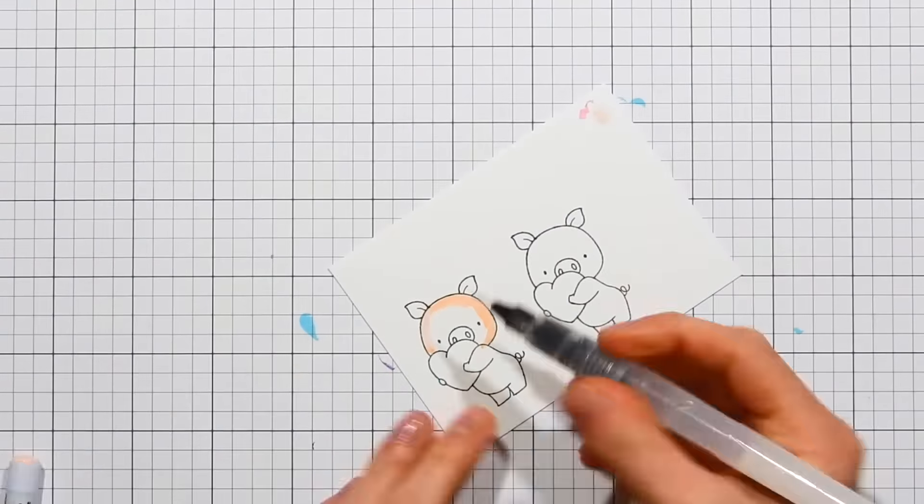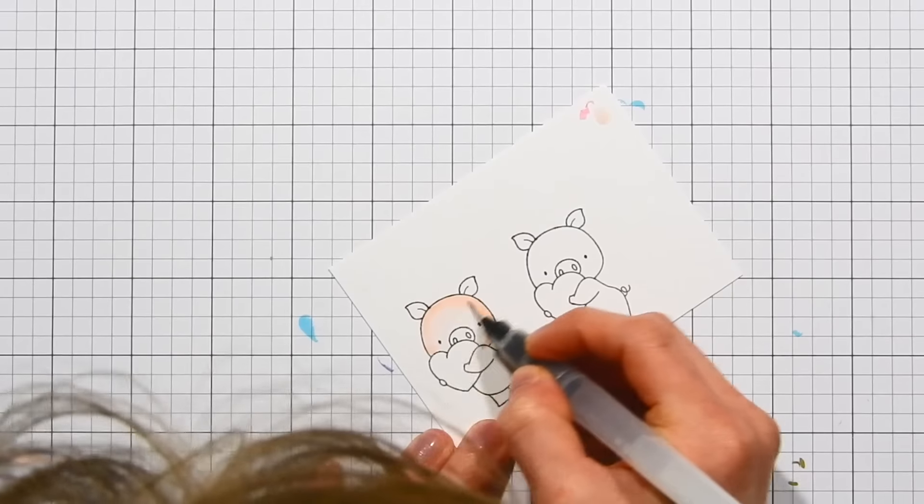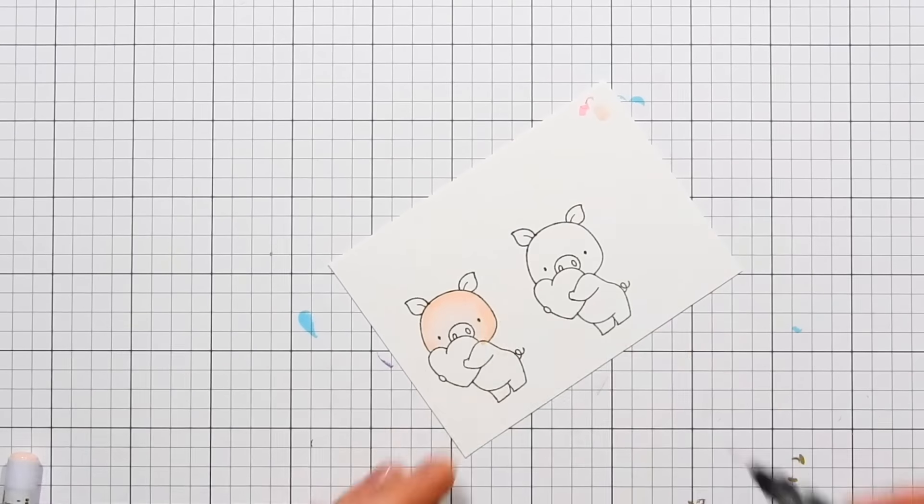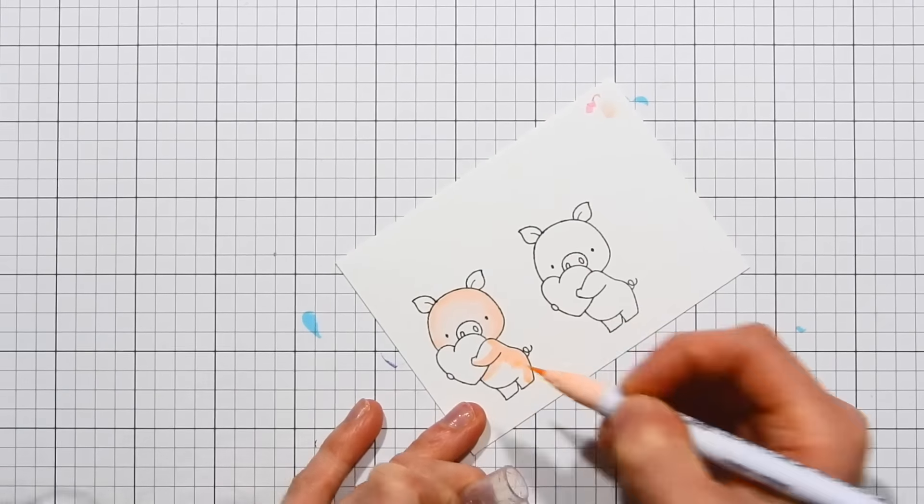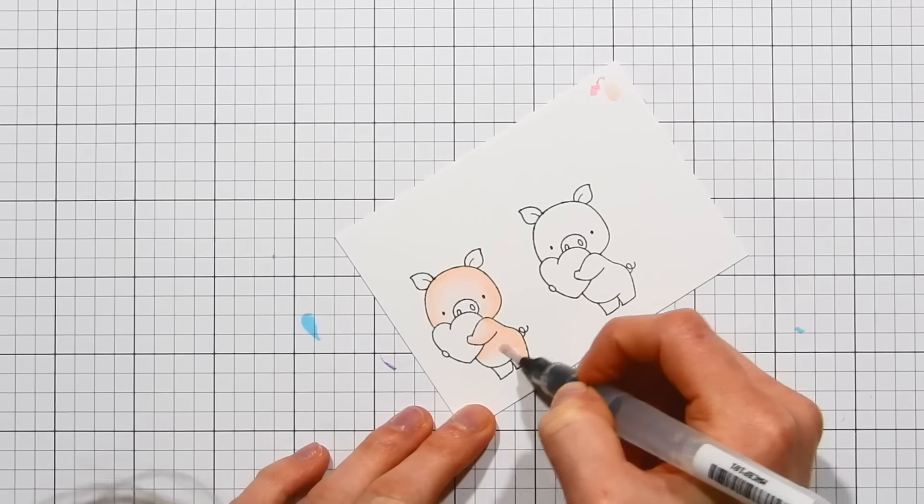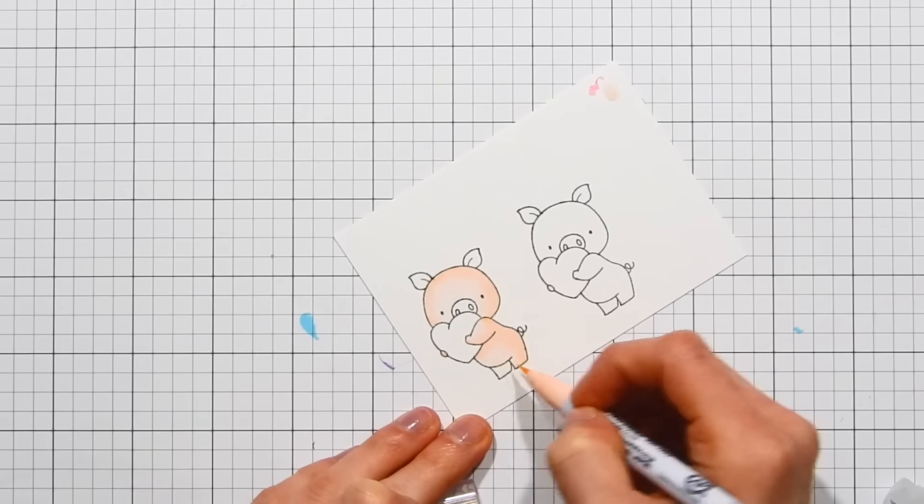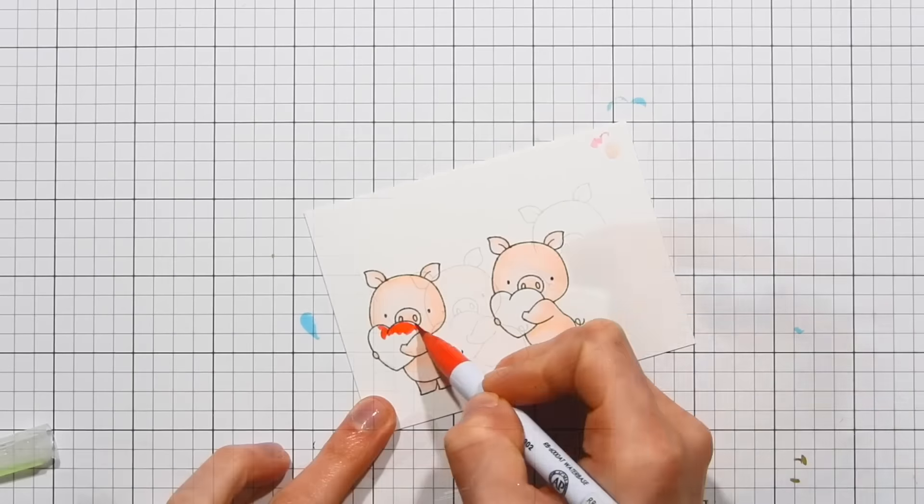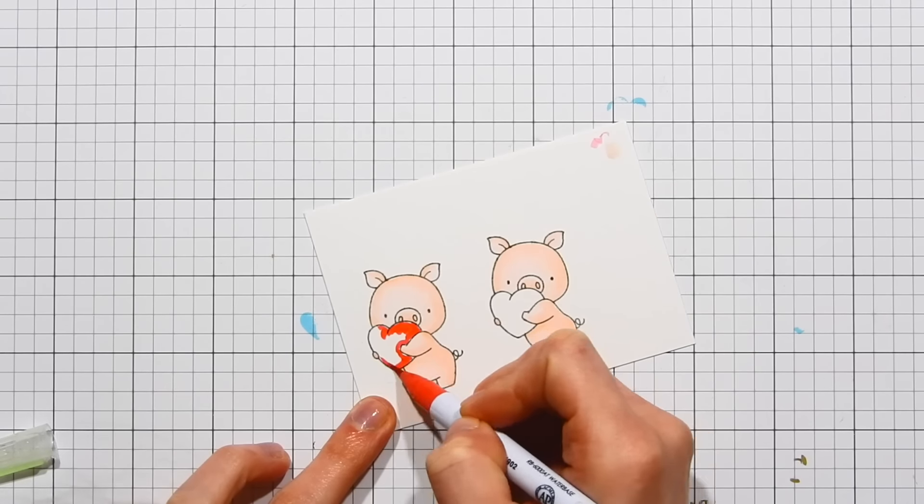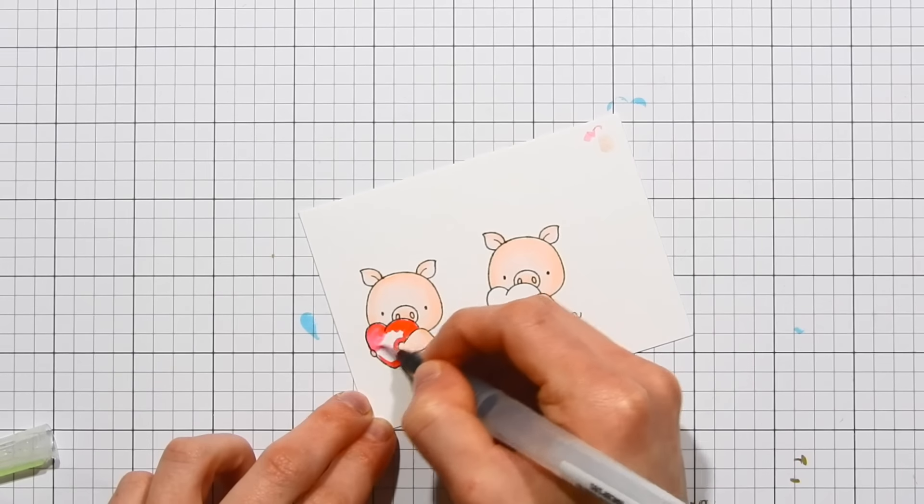Once I created my card base, I'm now taking the Hog Heaven stamp set and I stamped the little pigs onto a piece of watercolor paper—this is Strathmore Bristol smooth paper. I'm just going to quickly color these little pigs with a tea rose Zig marker and also carmine red. It was very simple shading—I didn't get very detailed with it.